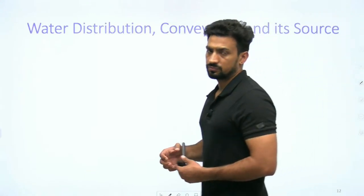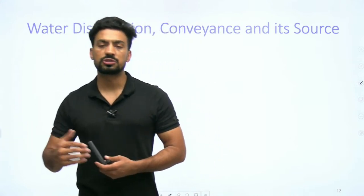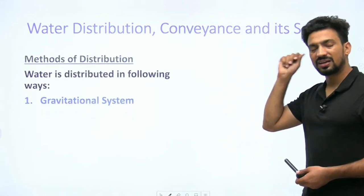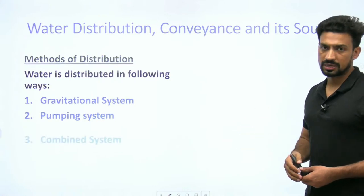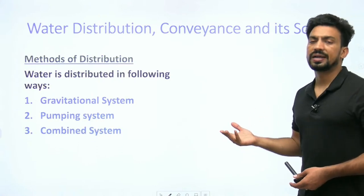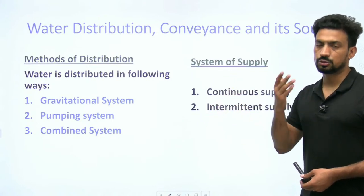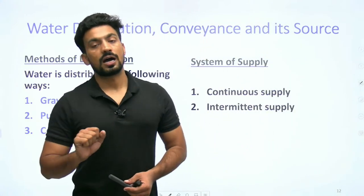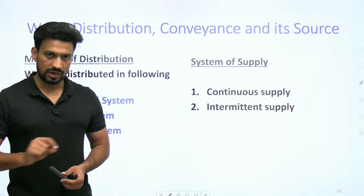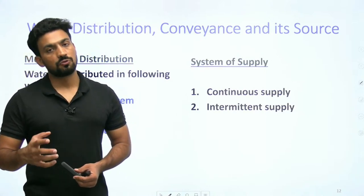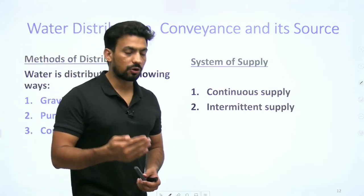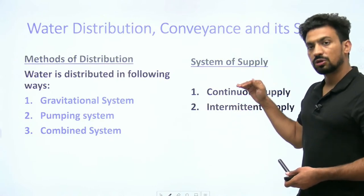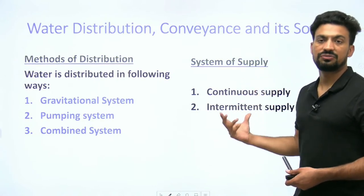अब बात करते हैं water को distribute और convey करने की - एक जगह से दूसरी जगह कैसे पहुंचाएंगे। Distribution के अलग-अलग methods हैं, जैसे gravity के through supply। Supply continuous रखनी है यानी हर समय anytime water available हो तो उसे continuous supply कहेंगे। अगर water सुबह 2 घंटे और शाम 2 घंटे इस तरीके से supply करना है तो उसे intermittent supply कहते हैं।